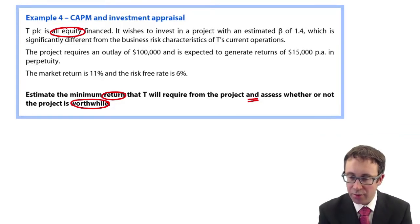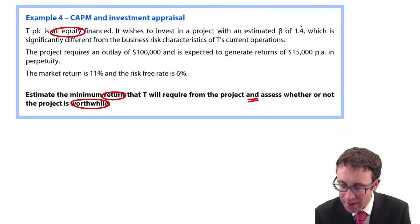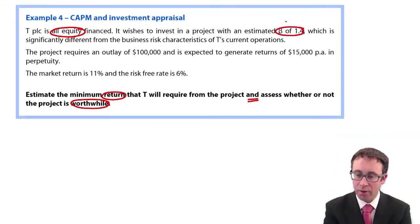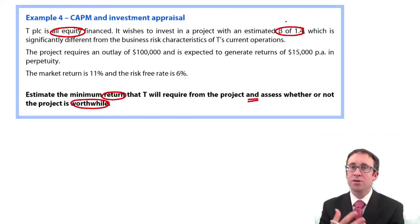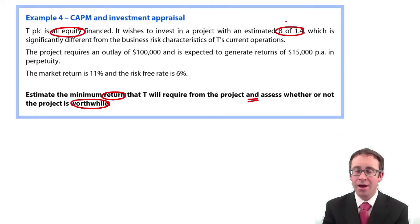It wishes to invest in a project with an estimated beta of 1.4, which is significantly different from the business characteristics of T's current operation. When we're appraising the new project, we need to use the risk of the new project to reflect how that project is going to change the risk within the business. It's going to be 1.4.